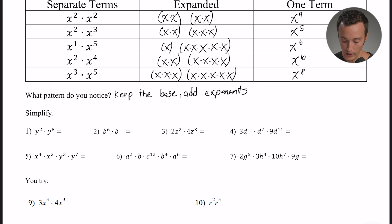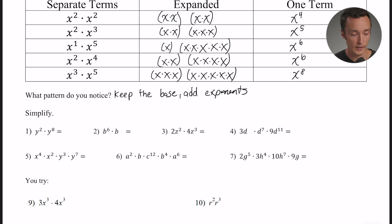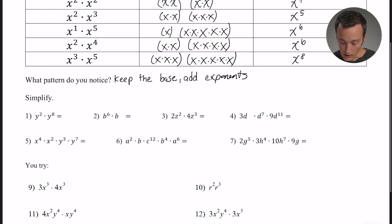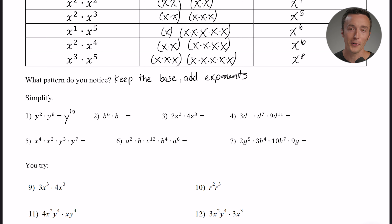So, for example, on that last one — x to the third power times x to the fifth power — you just add the exponents: three plus five makes eight, so it's x to the eighth power. That's the rule. Let's apply it in a few examples. Number one: y to the second power times y to the eighth power. Keep the base, which is y, and add the exponents — two plus eight is ten — so y to the tenth power.